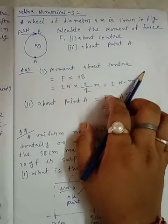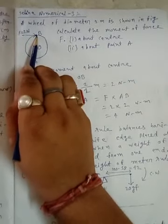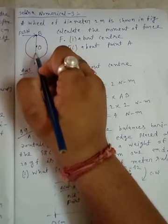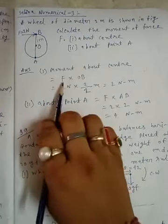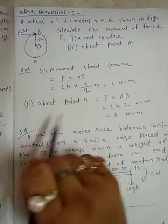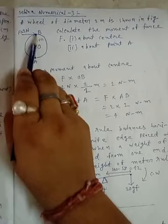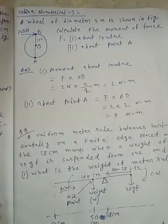Moment about center, center means O and force is applied at point B. Diameter is given as 2 meters, so when diameter is 2 meters, this distance is 1 meter. The moment about center will be F multiplied by this distance between center and applied force. So this will be OB. F multiplied by OB.